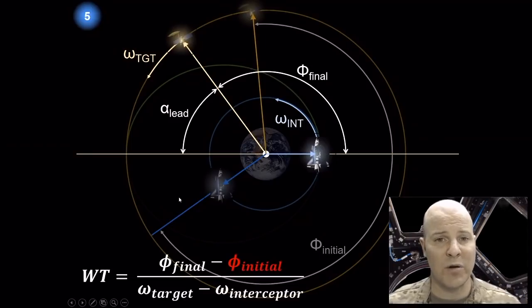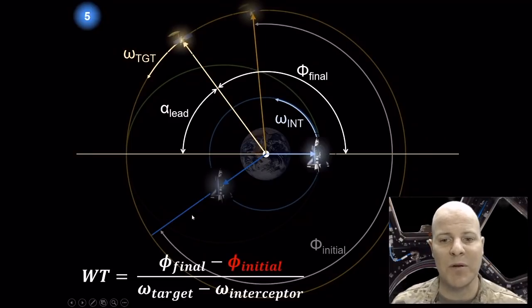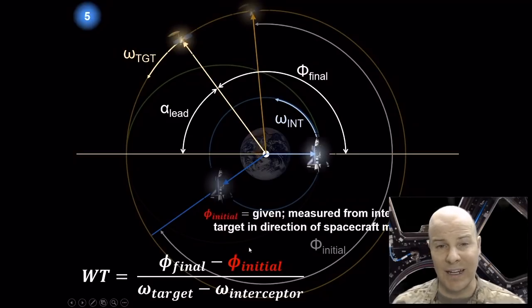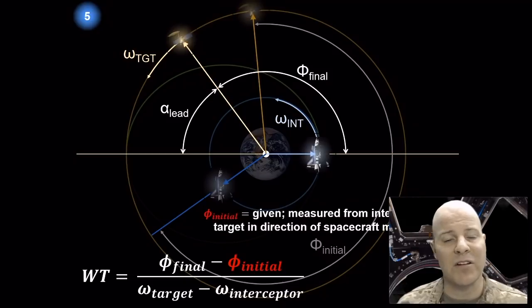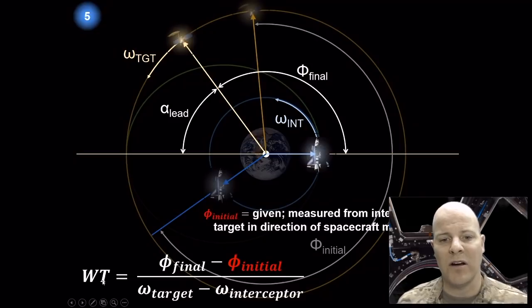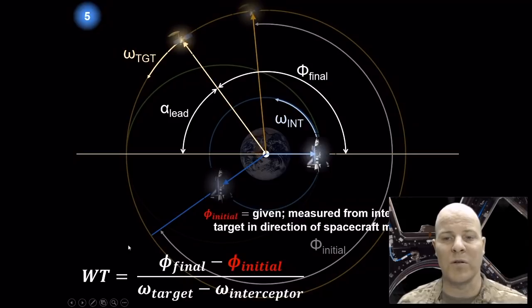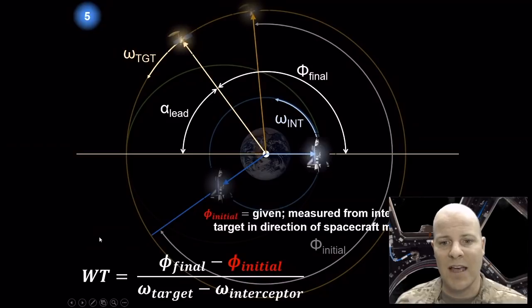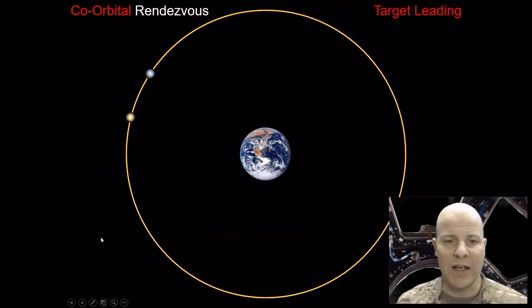We're almost done. On the equation sheet, wait time equals (phi final minus phi initial) over (omega target minus omega interceptor). The one piece not yet discussed is phi initial — that's typically given to you, measured from the interceptor to the target in the direction of spacecraft motion by convention. This initial condition determines how long we must wait for the stars to align so that when we perform our Hohmann-like transfer, the target is in the vicinity and we can complete the coplanar rendezvous.